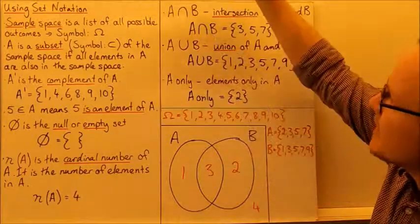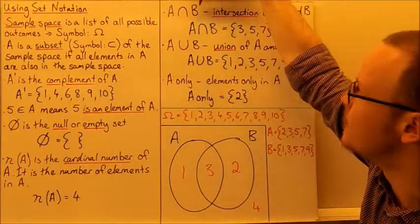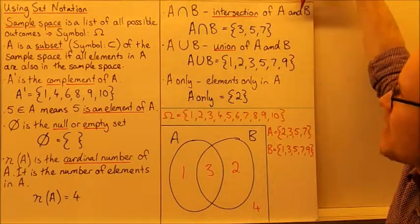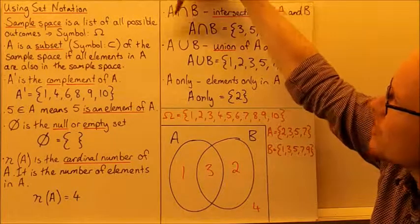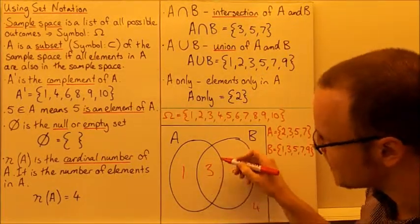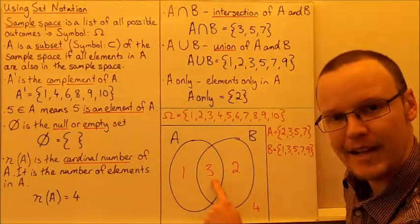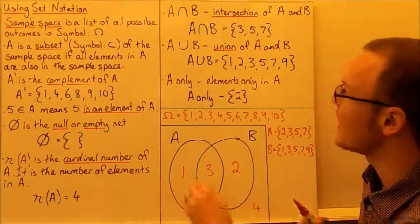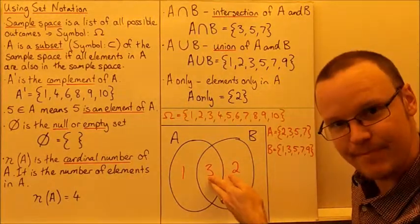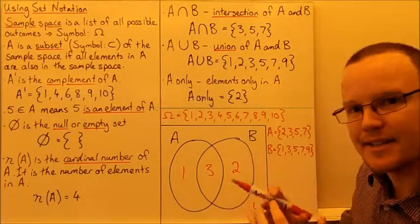A and this sort of upside-down loop B — A intersection B — means the intersection of A and B, which is the stuff in the middle. The intersection of A and B is 3, 5, and 7, and we said there are 3 elements there. So the cardinal number of A intersection B is 3.